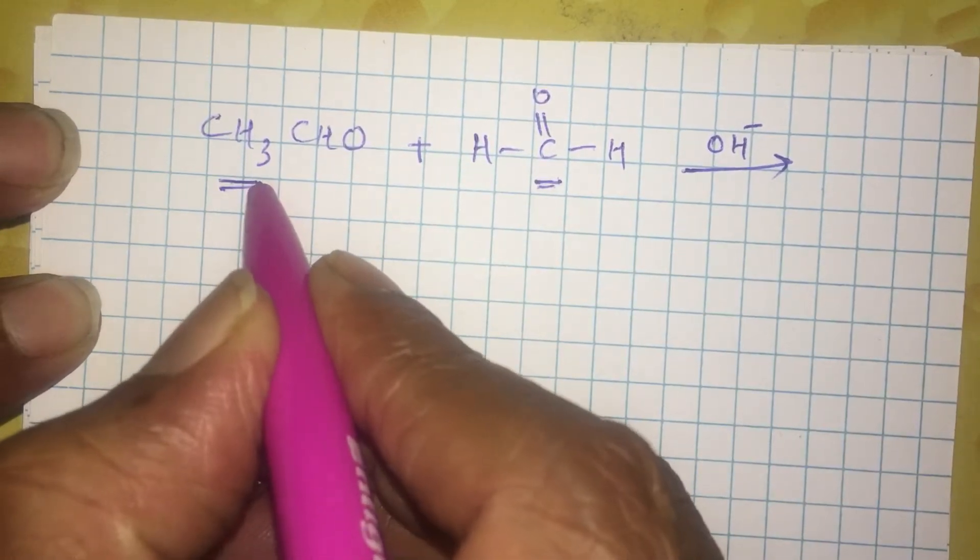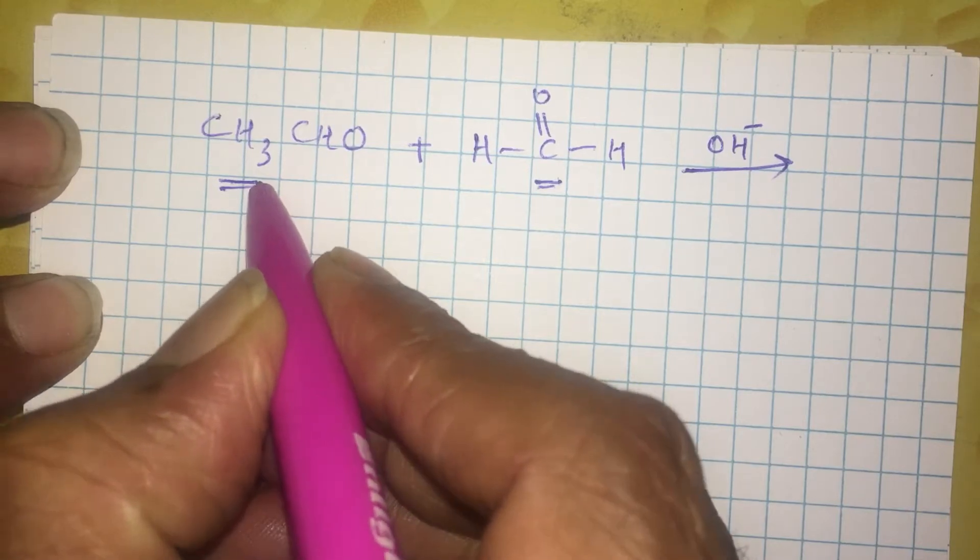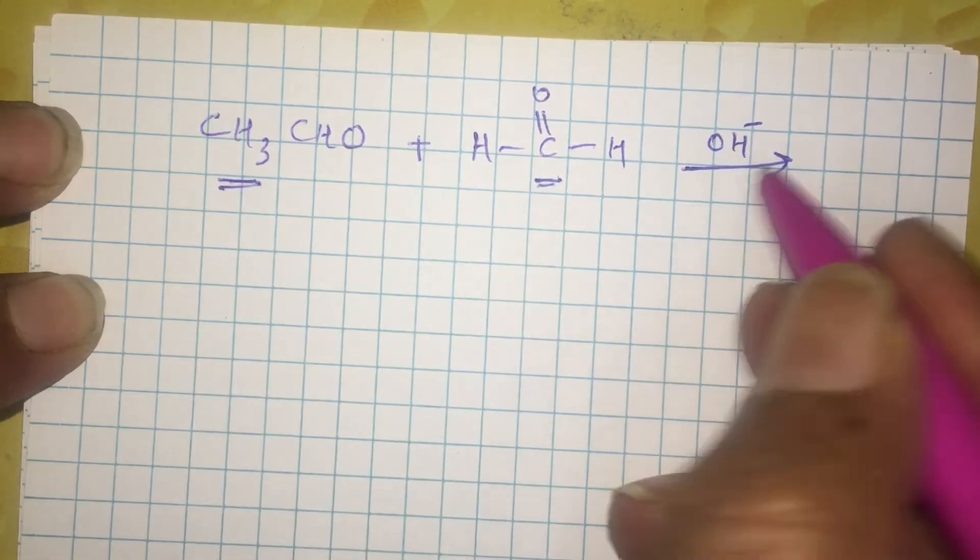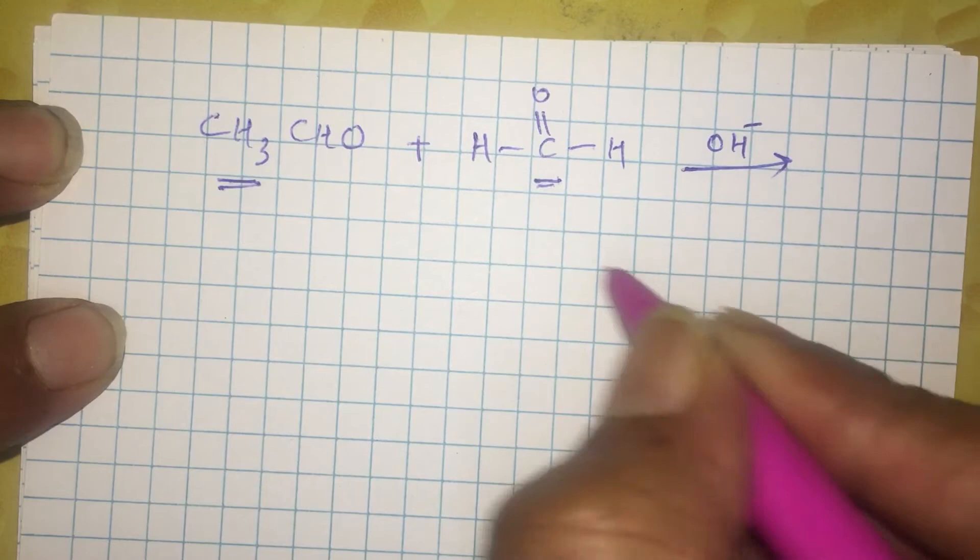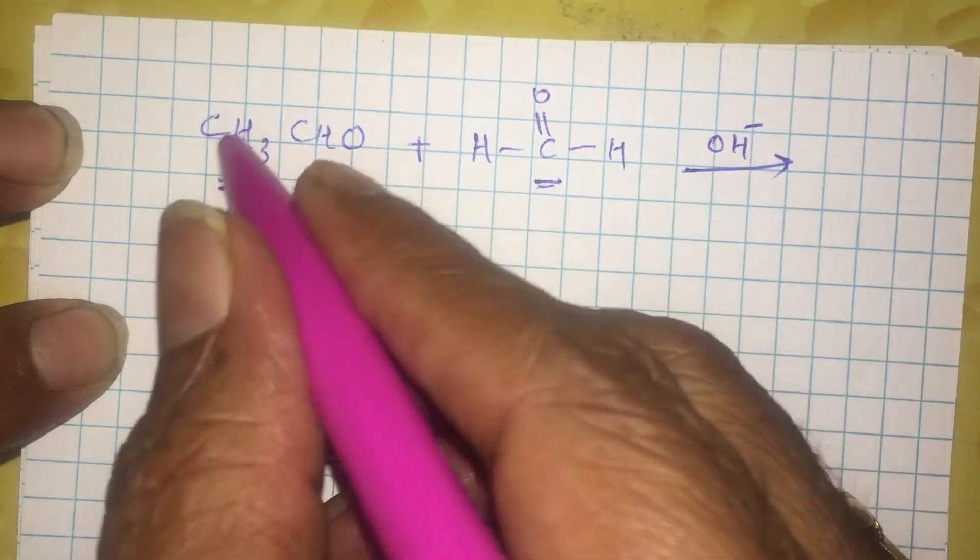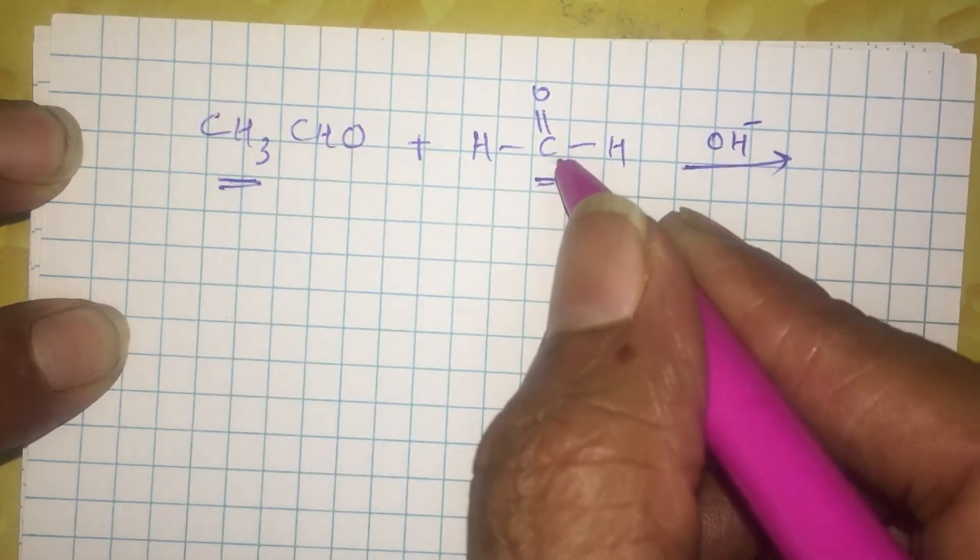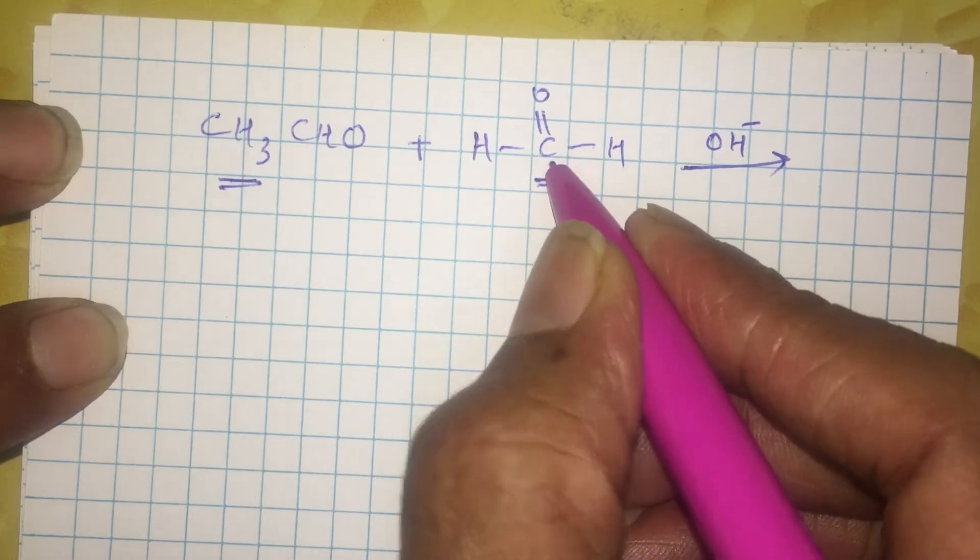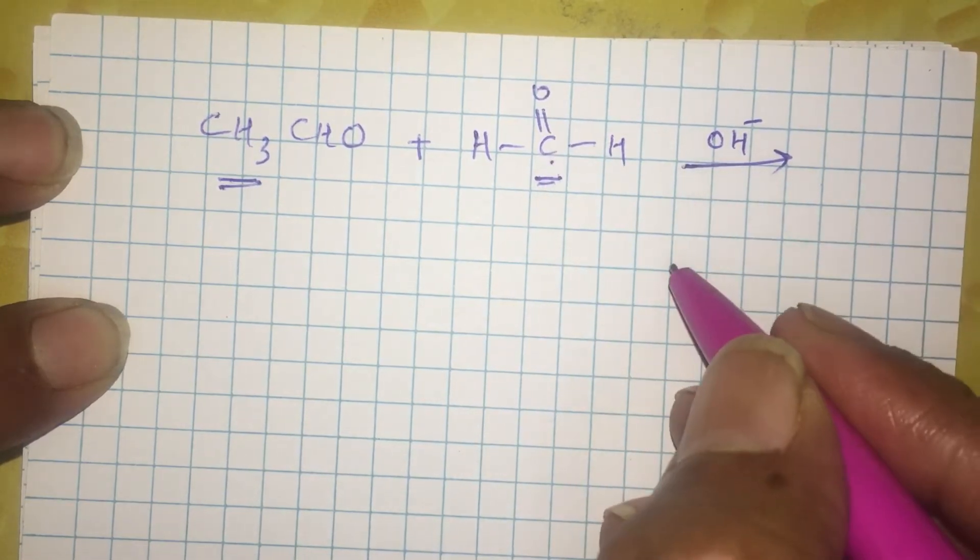So it is the acetaldehyde that makes a nucleophile, that is enol form, the CH2 minus CHO that attacks the carbonyl carbon, which is an electrophile.